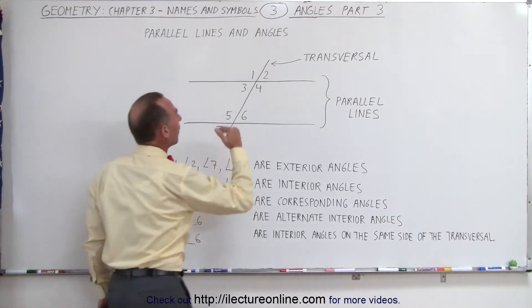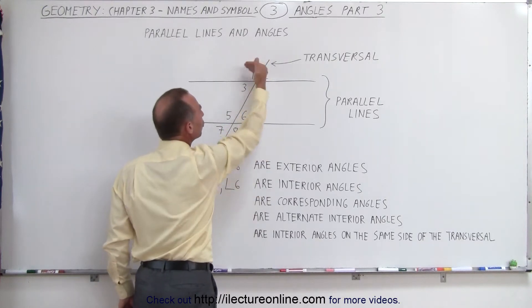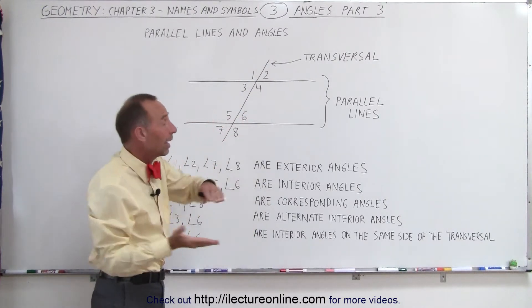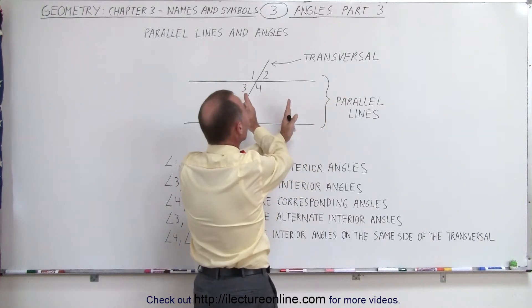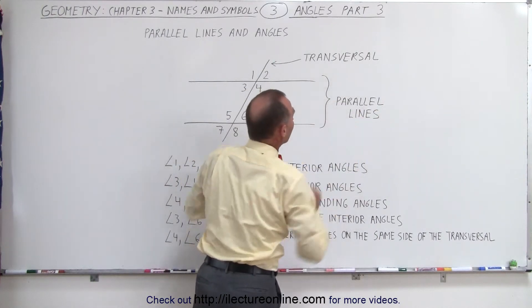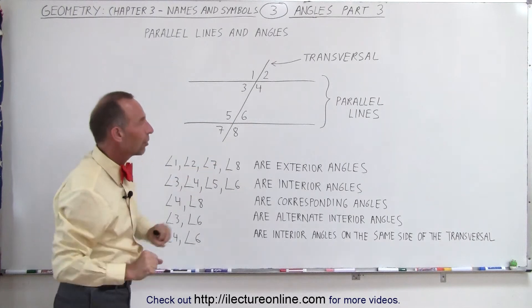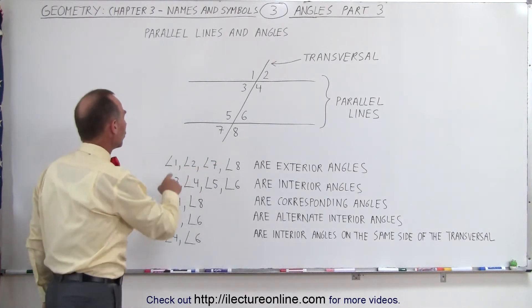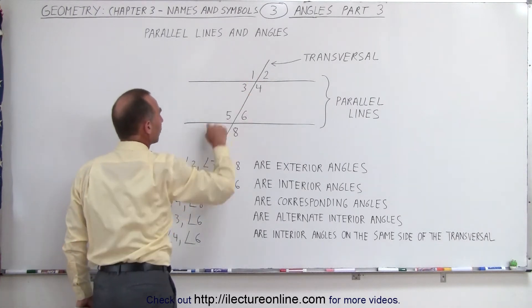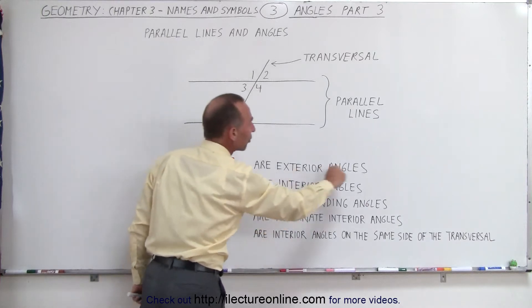The ones above and below the two parallel lines—now of course the parallel lines could have been turned around like this, then it would be outside on this direction, outside on that direction—just on the outside of the two parallel lines we call those angles. Notice one, two, seven, and eight—they're called exterior angles.